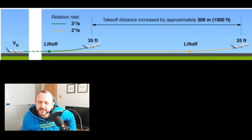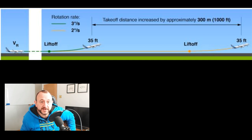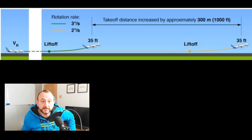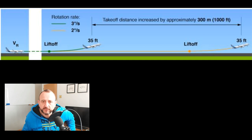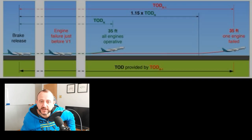A rotation rate lower than the requested three degrees per second significantly increases takeoff distance. For example, a takeoff performed with two degrees per second rotation rate increases the takeoff distance by approximately 300 meters — nearly a thousand feet — compared to the correct three degrees per second rate. That's quite significant, and you can't ignore that. I'm going to be putting some graphics up as well just to show some examples of what we're talking about here — these are lifted straight out of the article.